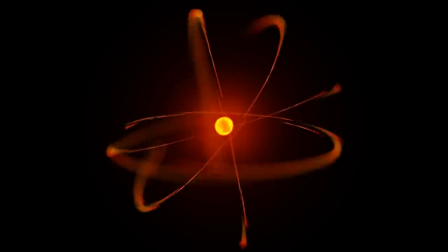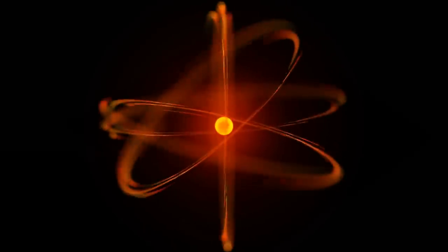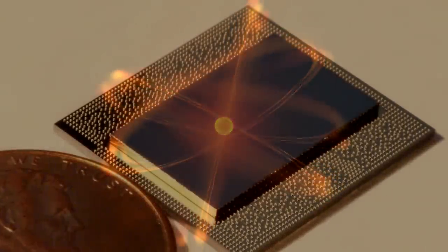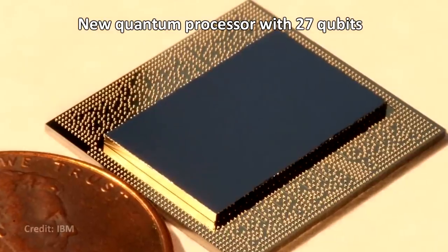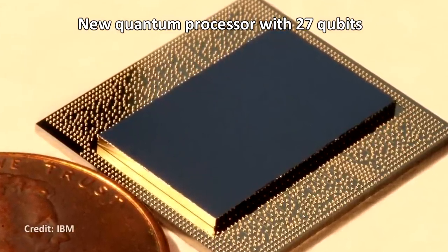Practically, a qubit can be created by various quantum objects like photons, electrons, or even atoms. It doesn't really matter. It just needs to be a quantum object in superposition.